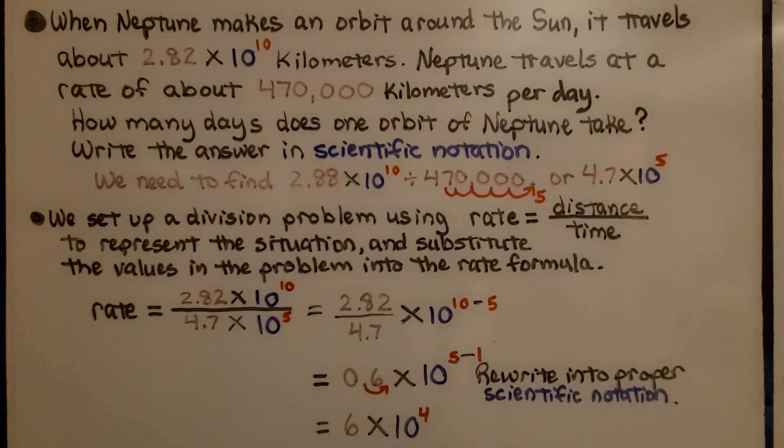When Neptune makes an orbit around the Sun, it travels about 2.82 times 10 raised to the 10th power kilometers. Neptune travels at a rate of about 470,000 kilometers per day. How many days does one orbit of Neptune take? Write the answer in scientific notation.